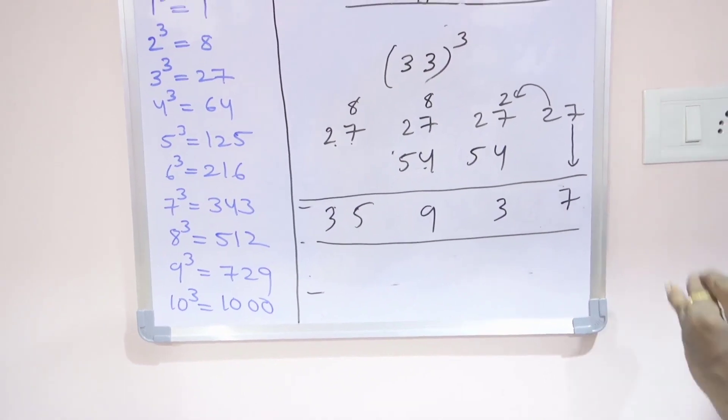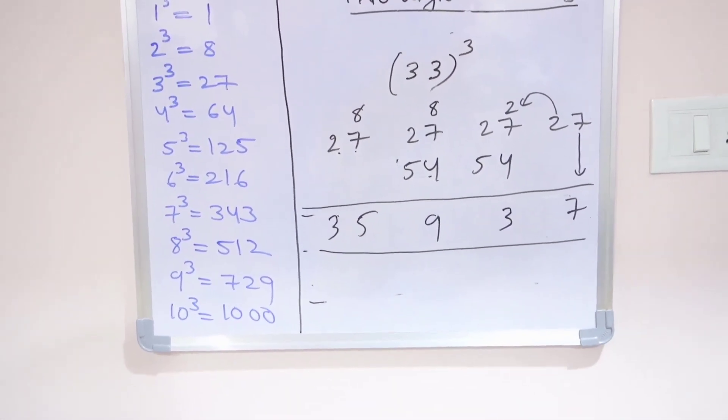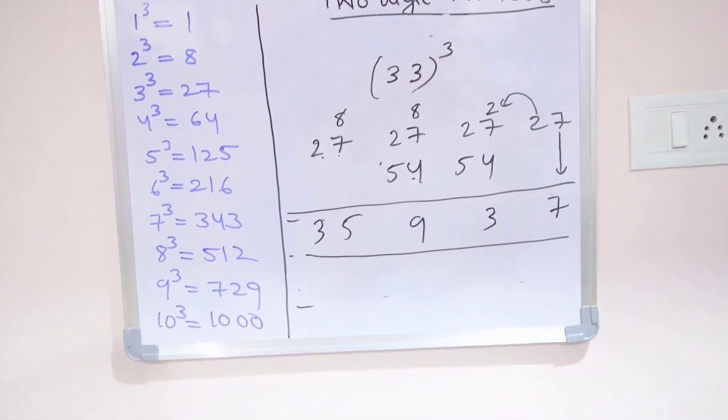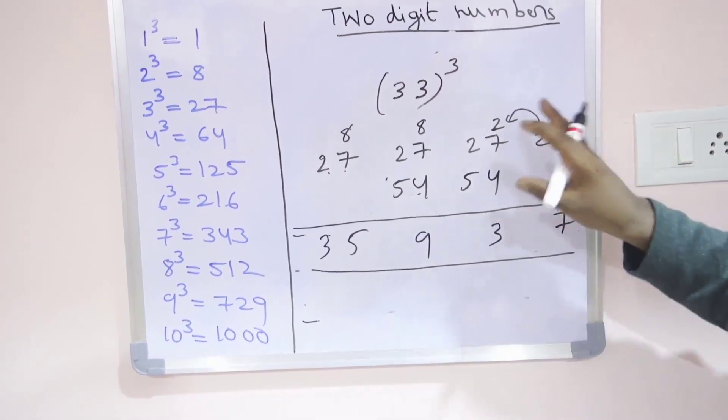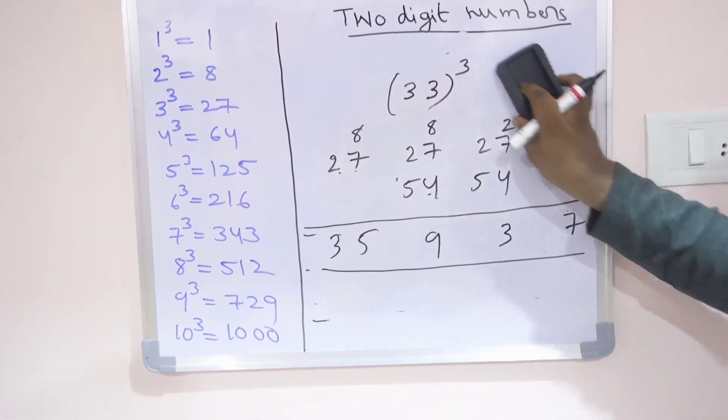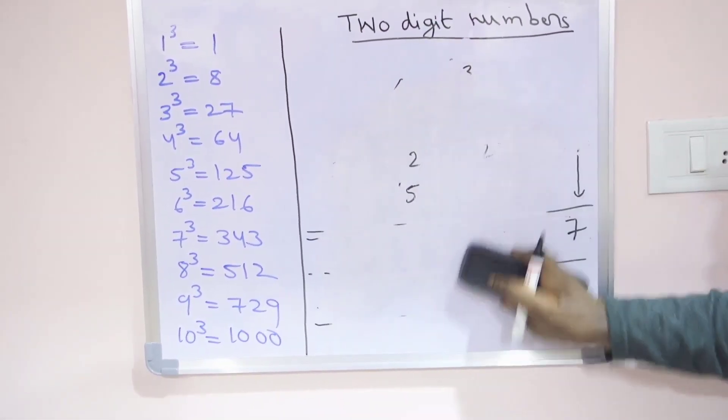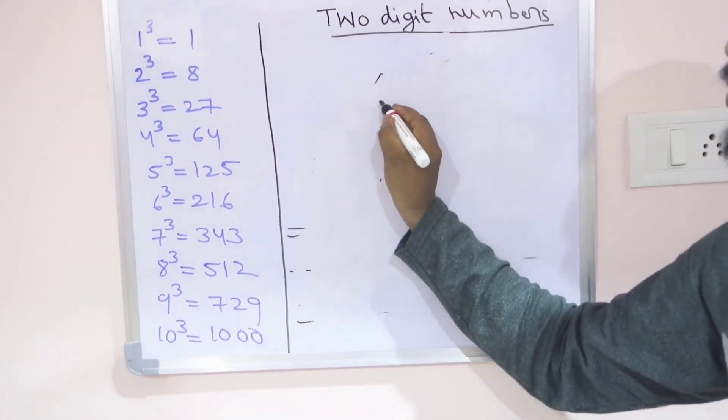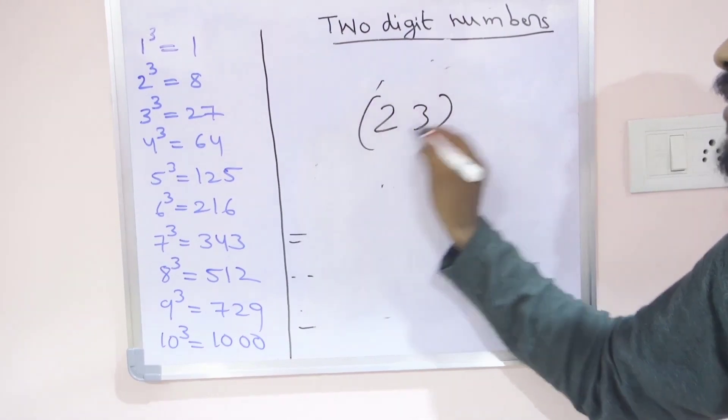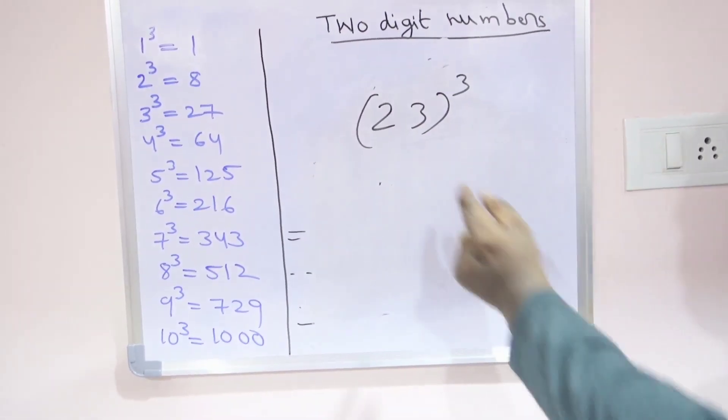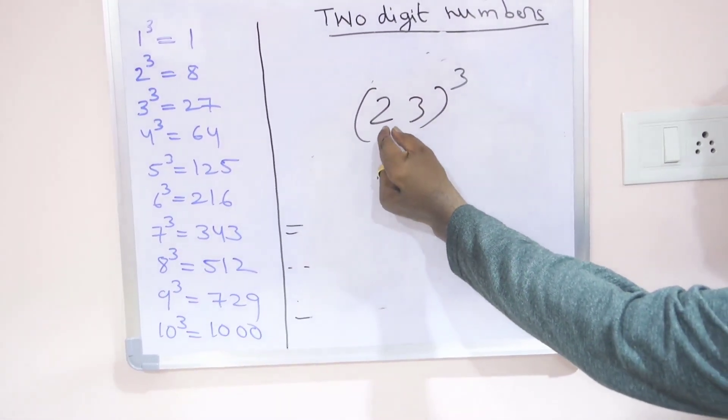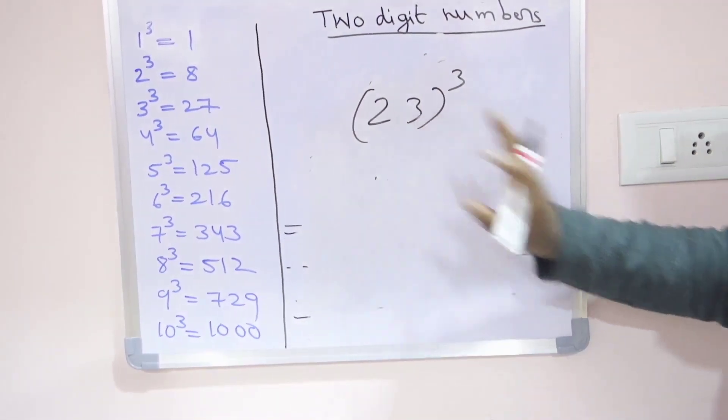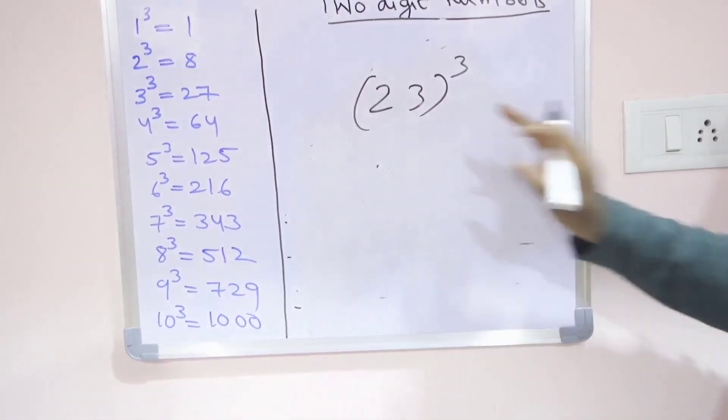Still now we discussed ending with 1, starting with 1, and the same numbers like 33, 44. Same methods you can apply. Next we will go for different numbers. Suppose example 23. It is not starting with 1 and not ending with 1 also. So then we go for this method.